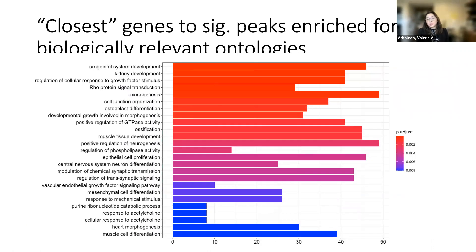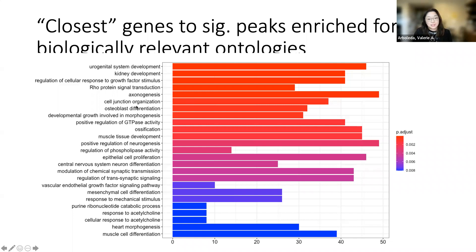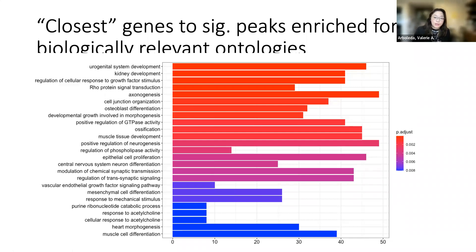We took all the closest genes to these regions that are very open in the DNA and asked whether there are any biologically relevant pathways. These are all known pathways established in the literature. There are a number of processes that we think are probably important in human development, including neuronal and brain development, but also bone development and muscle tissue development. These are all telling us that we're seeing relevant genes being dysregulated — even though we're not always in the right tissue. We're not looking at brain tissue, but we are seeing things related to neuron development, such as axon-related genes being dysregulated in fibroblasts.